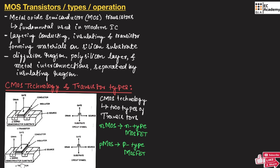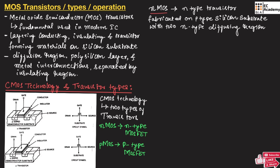This is the structure of PMOS and the symbol of PMOS. It consists of drain, source, and gate. NMOS is an N-type transistor fabricated on a P-type semiconductor substrate along with two N-type diffusion regions. NMOS uses electrons as majority charge carriers.